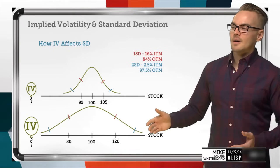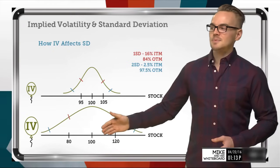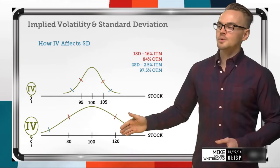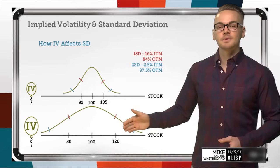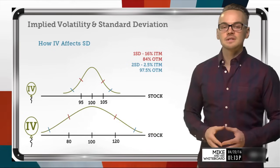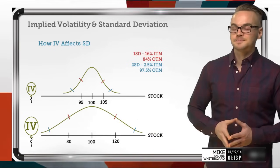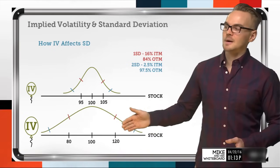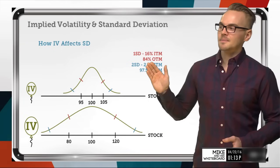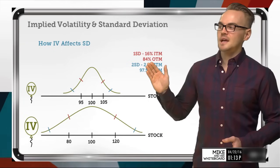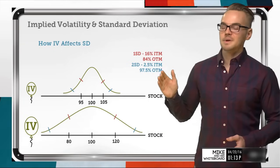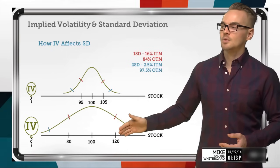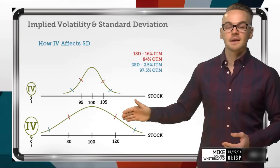In this higher volatility environment, looking at these probabilities and going all the way to $120 for the one standard deviation mark — in a higher volatility environment I might be able to capture an 84% chance of being out of the money by selling a call on the upside at the $120 strike, as opposed to the $105 strike in a low volatility environment.